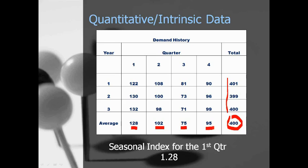The way that you create the seasonal index — which is at the bottom of the screen — you take the total you're planning to sell for the year (in this case 400), divided by whatever breakdown you choose (in this case quarters), so the average demand is 100 per quarter. To create the seasonal index, if you look at the first quarter, you take 128, divide it by the average demand over all four quarters of 100, and that brings you to a 1.28 seasonal index. We've gotten part of the way there — we've looked at the internal data we have to figure out what the seasonal index should be.